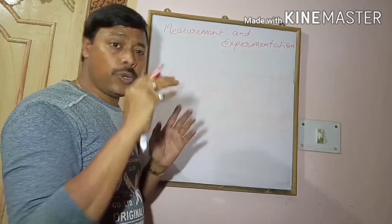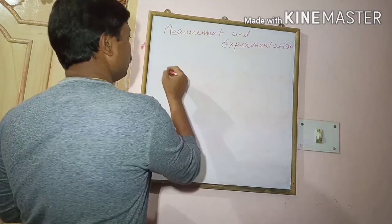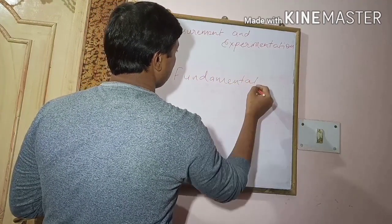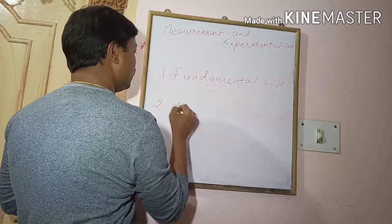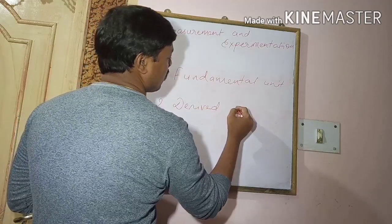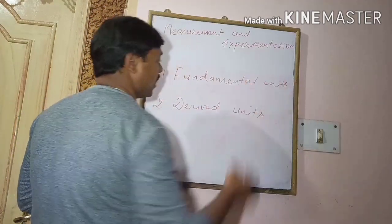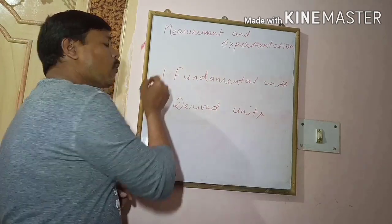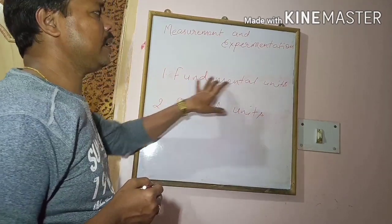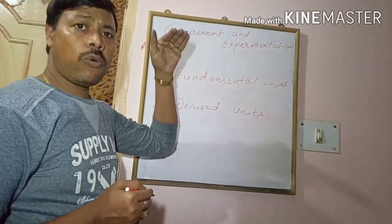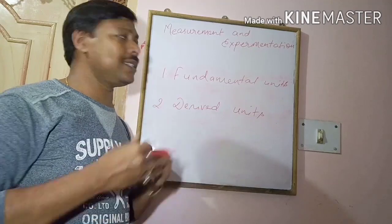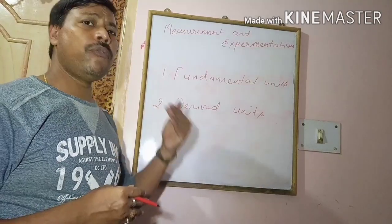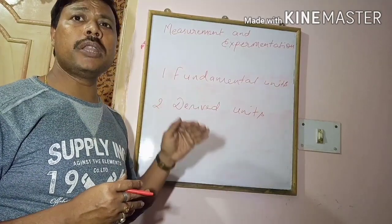Units are divided into two types: fundamental units and derived units. Fundamental units are units which cannot be expressed in terms of other fundamental units, or which do not depend on other fundamental units.